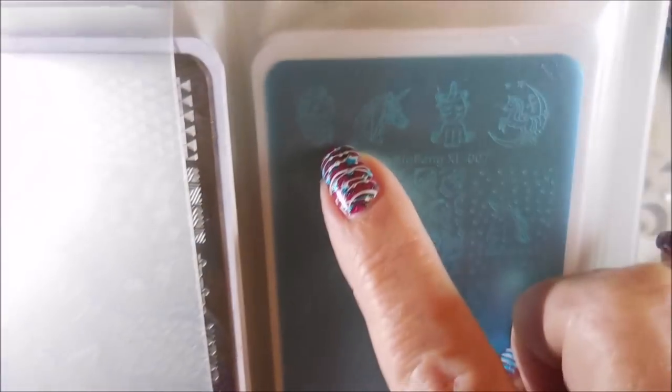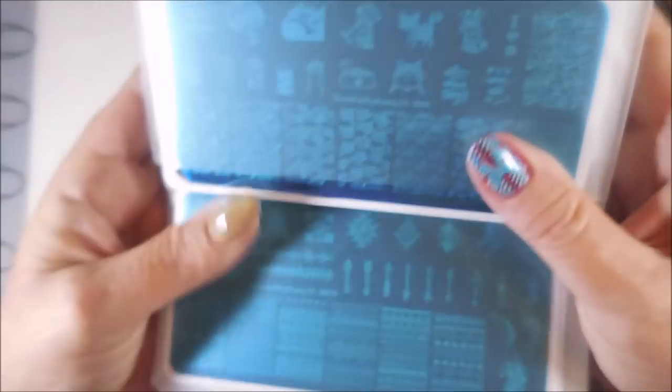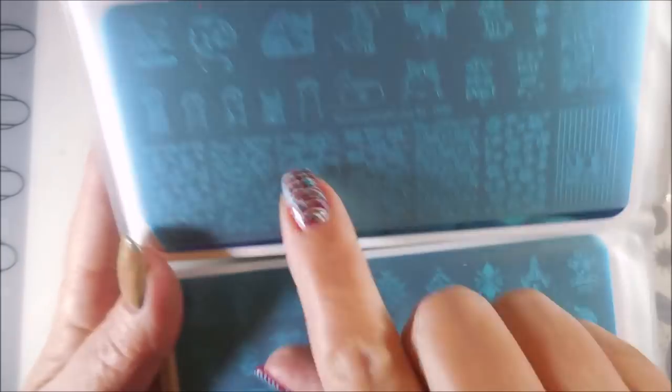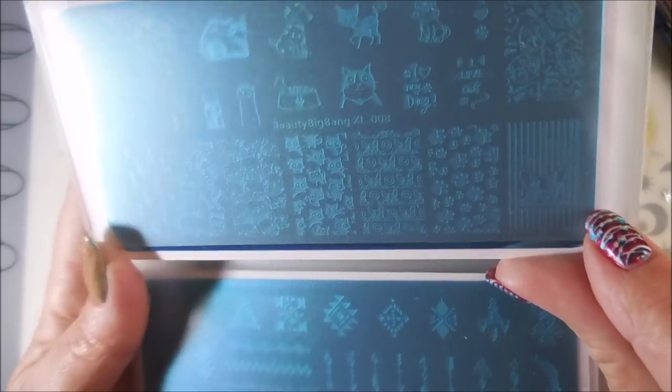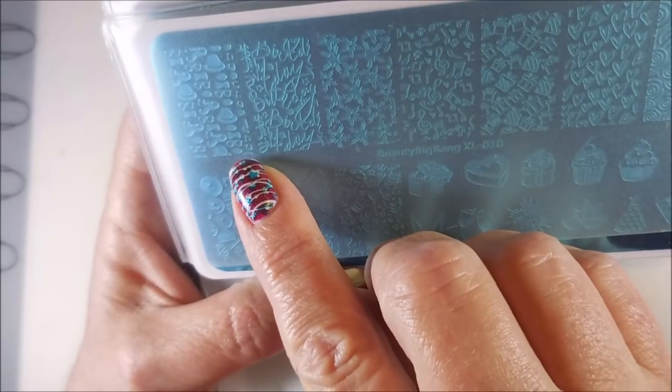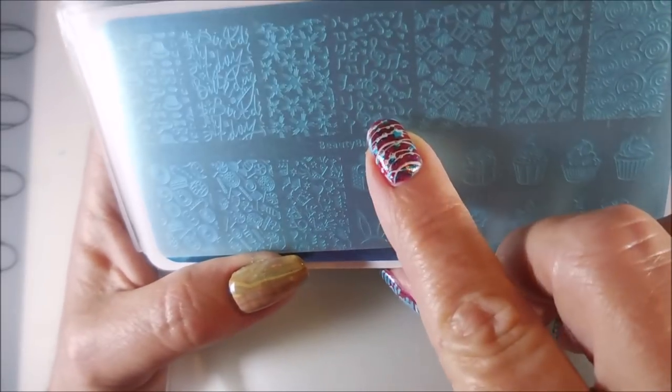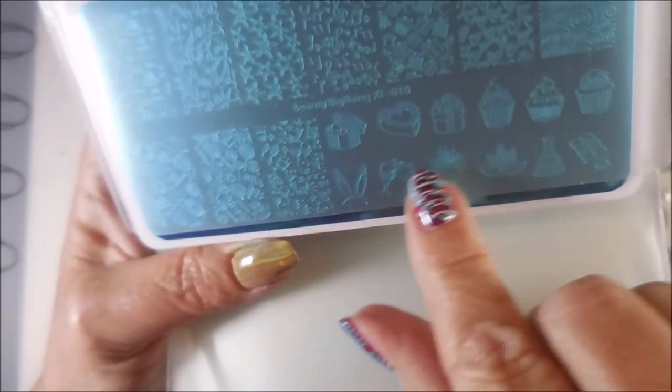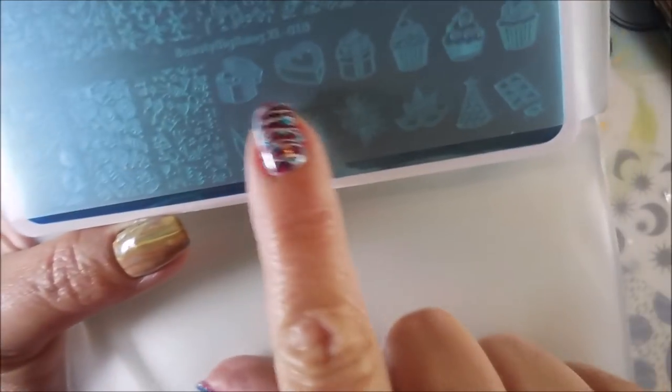And then this one is the unicorn plate, which is beauty big bang XL 007. Got some little smaller images up here and then the full nail designs. Beauty big bang XL 008, this is the animal one with all the little kitty cats and puppy dogs. And beauty big bang XL 009, which is like the tribal prints and arrows. And then beauty big bang XL 09, this one's really cool. It's got little hats and birthday and flowers and music notes and presents and hearts. This is like an all occasion plate.